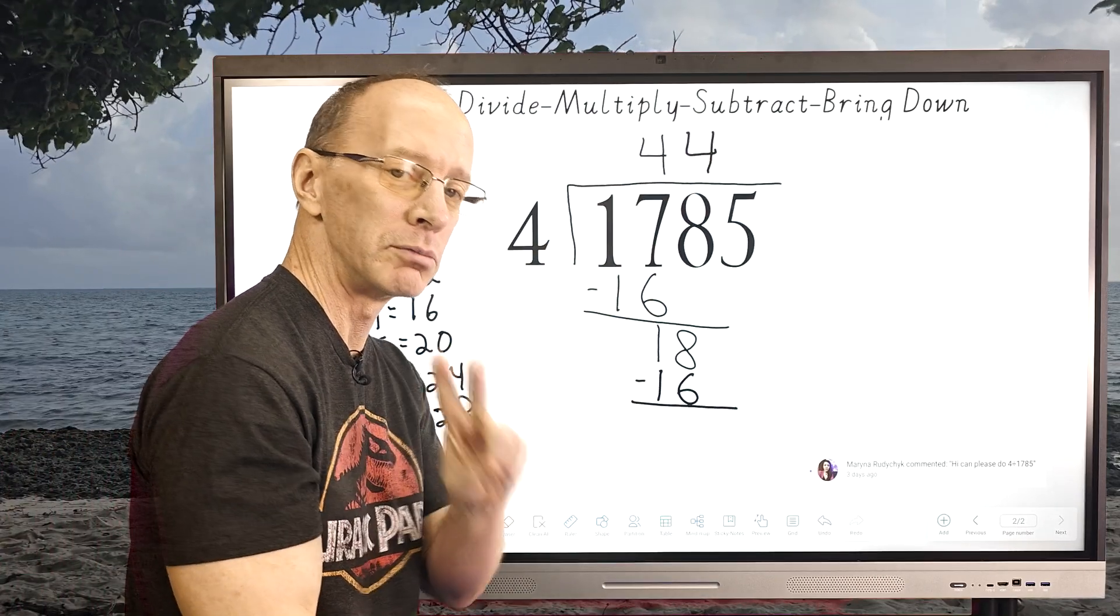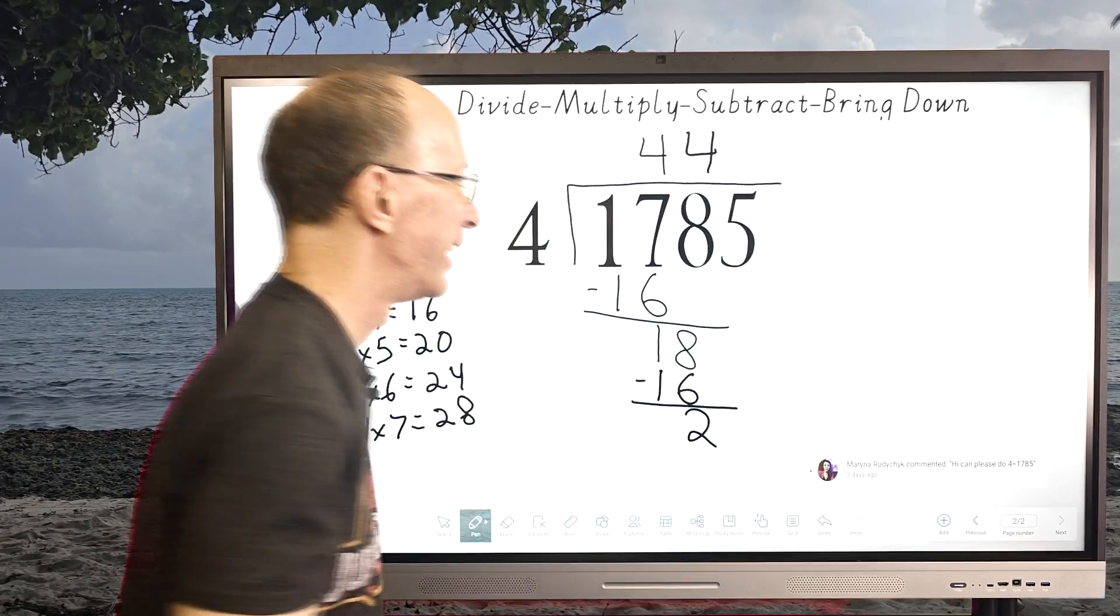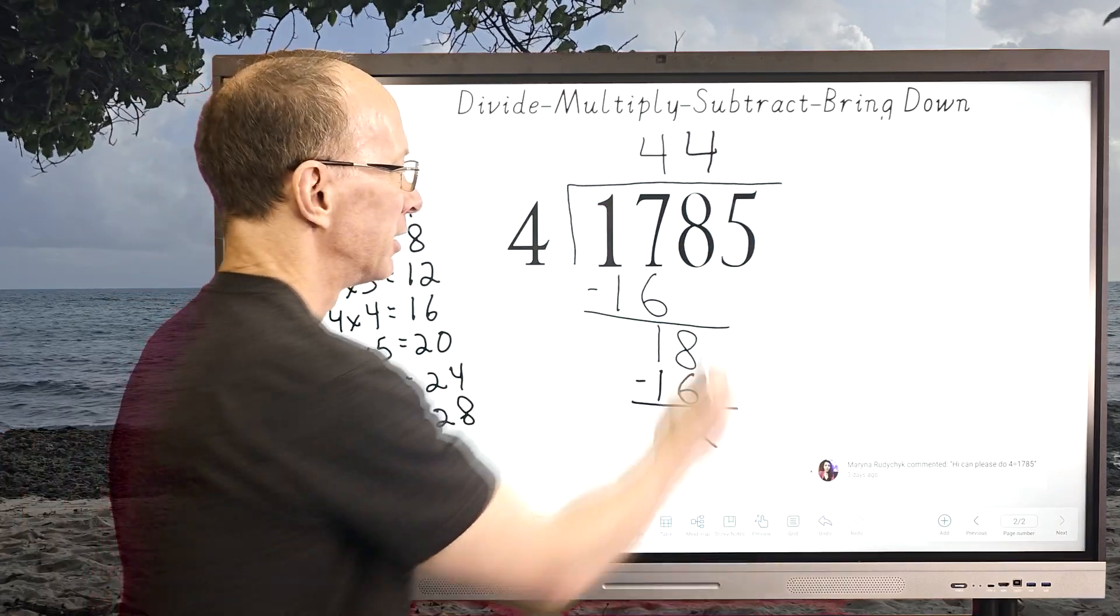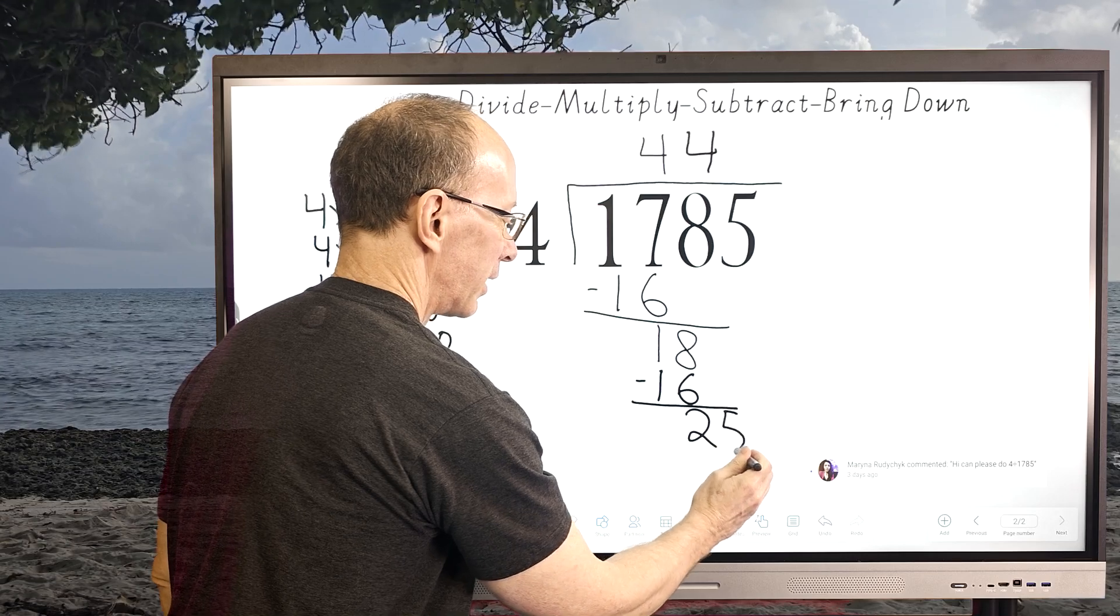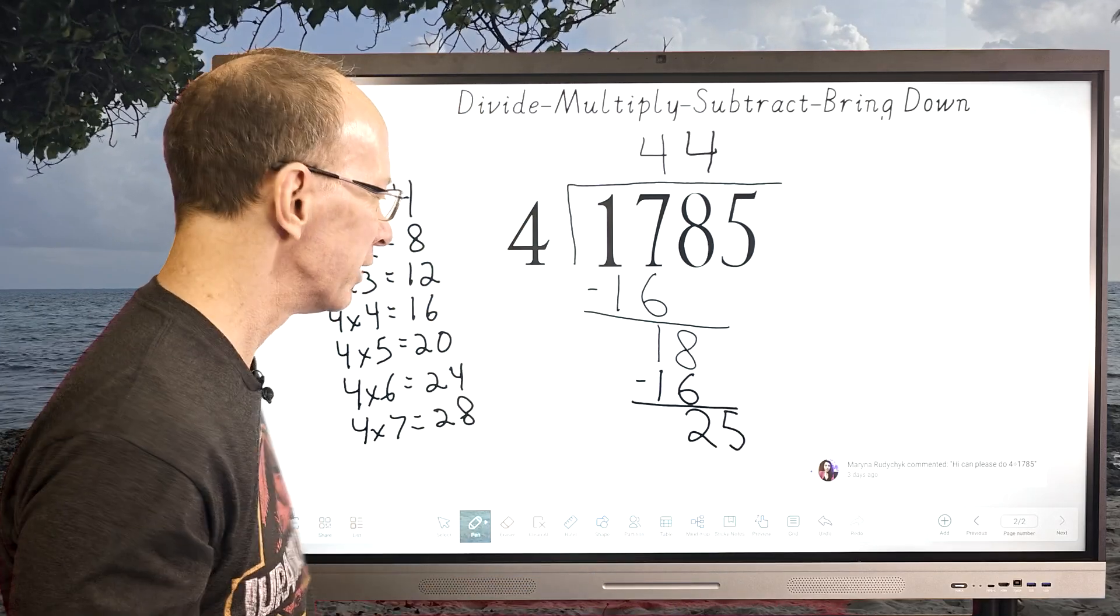Then I'm going to subtract, and then 8 minus 6 equals 2, uno dos, a little Spanish right there for you. Then our next step is to bring the next number down, so I'm going to bring that down all the way here. If you're doing good so far, hit that like button, let me know how you're doing.